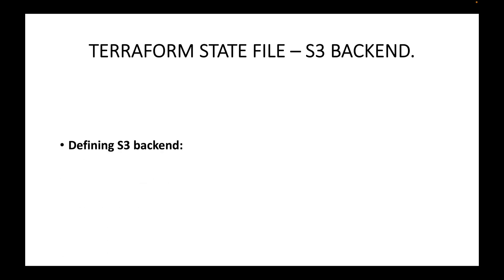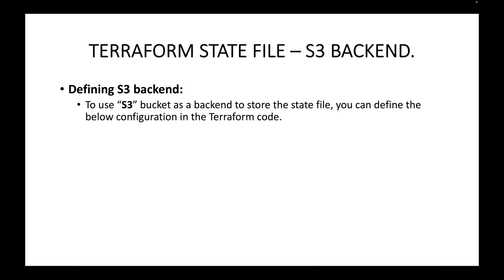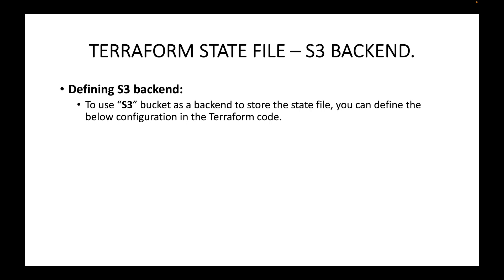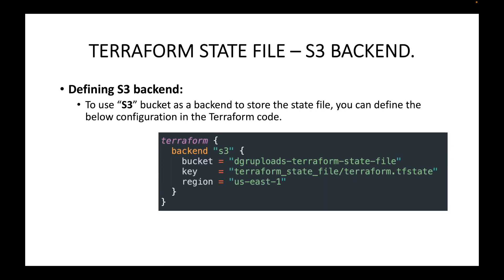So how do you define the S3 backend? If you want to use the S3 bucket as your backend to store your Terraform state file, you define the below configuration within your Terraform code. You'll have the terraform block, and within it the backend block. Here we have defined our backend type as S3, which tells Terraform that we will be using an S3 bucket as our backend.